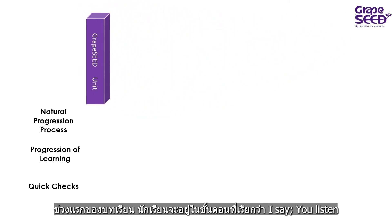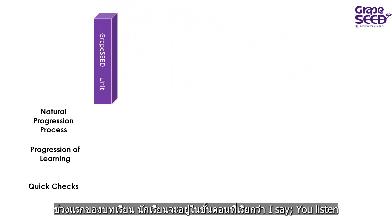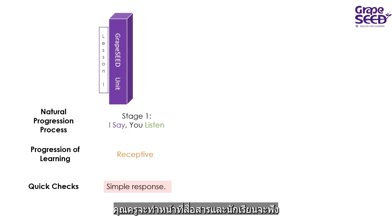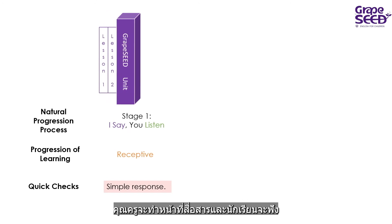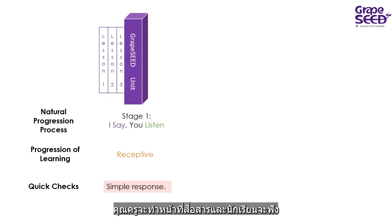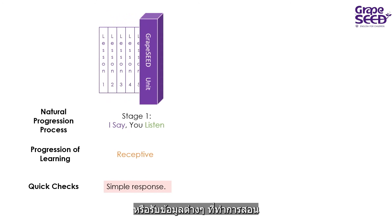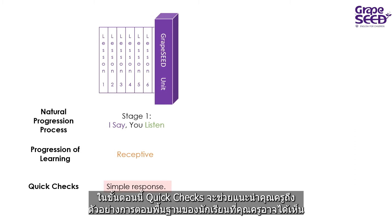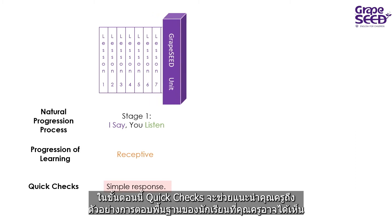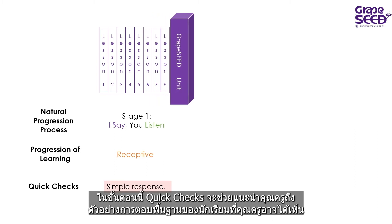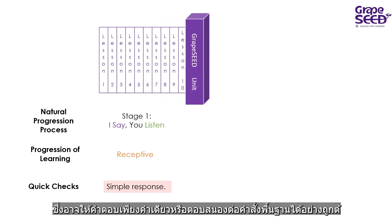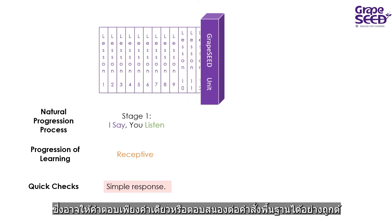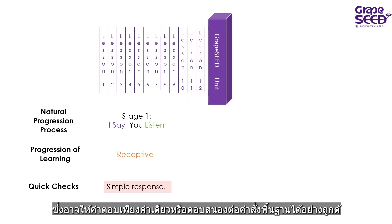In the beginning lessons, the students are in the 'I say, you listen' stage. The teacher is doing most of the delivery and the students are listening to or receiving the information being taught. In this stage, the quick checks will help guide the teachers to look for simple responses they might see the students make, such as giving a one-word answer or responding correctly to simple commands.